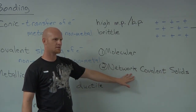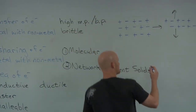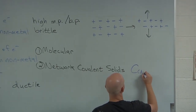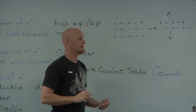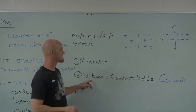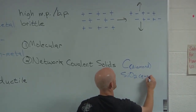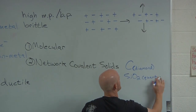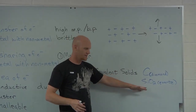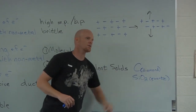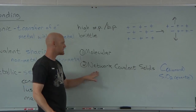Can anybody name a network covalent solid? Diamonds. So what's a diamond made of? Pure carbon. And carbon being a non-metal, all the carbon atoms are bonded to each other with covalent bonds. So it's covalent, but it does form a crystal — we call it a network covalent solid. The other one you might see is SiO₂ — quartz. Silicon and oxygen, with silicon being a metalloid, still considered covalent bonding, and it also forms a crystal. Those are your two big examples of network covalent solids.